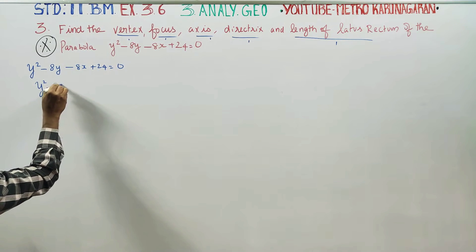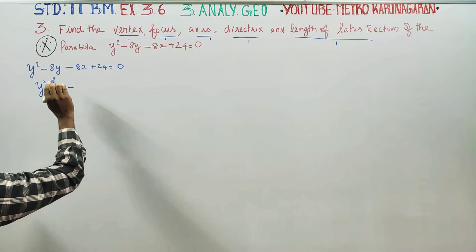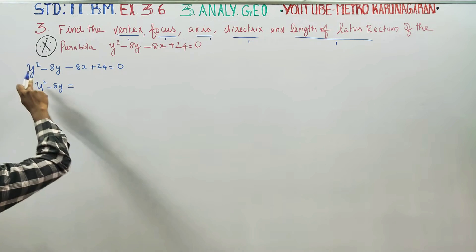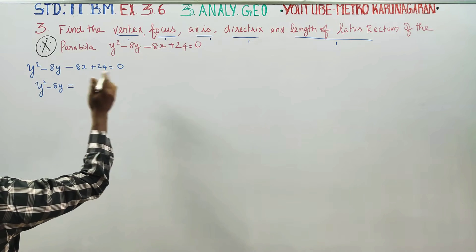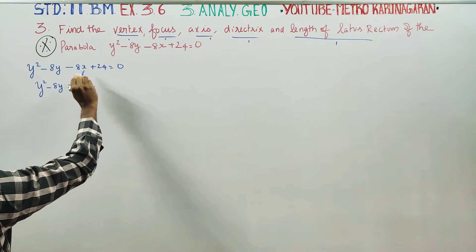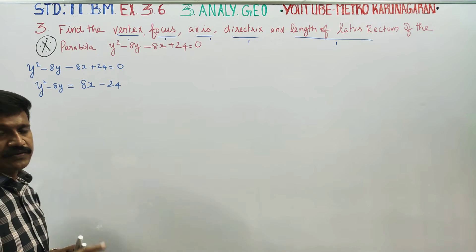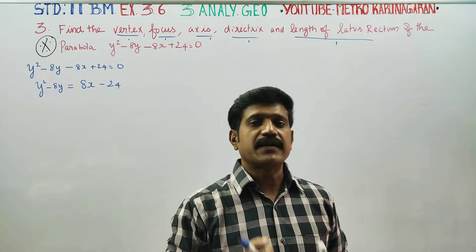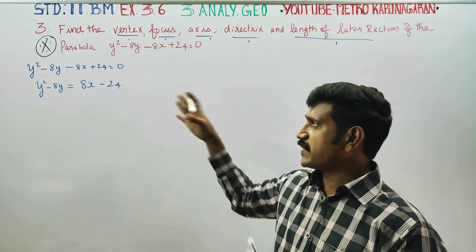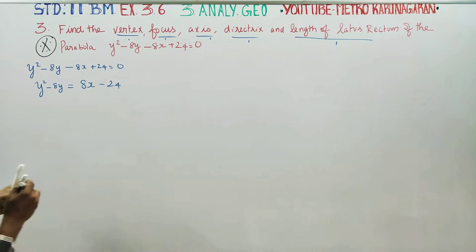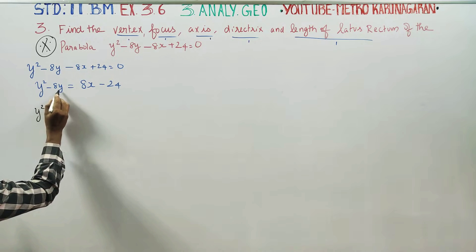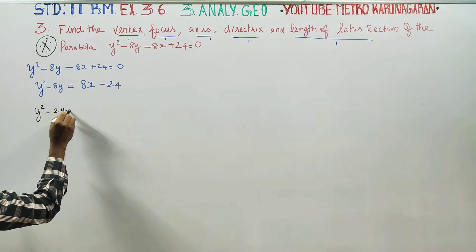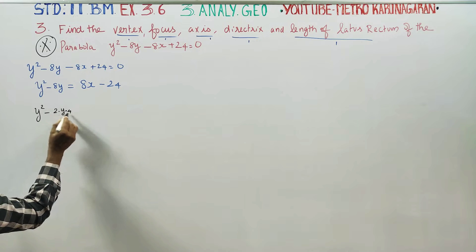Y squared minus 8y — the Y squared term is the square part. We separate the Y terms from the X terms: minus 8x plus 24. Now take Y squared minus 8y. The middle term is 2 times y times 4, giving 2 × 4 = 8y.